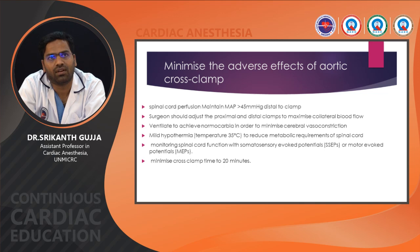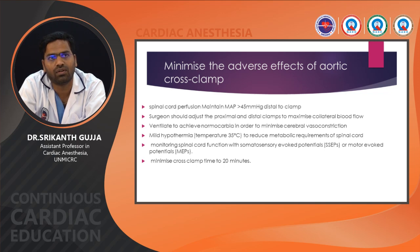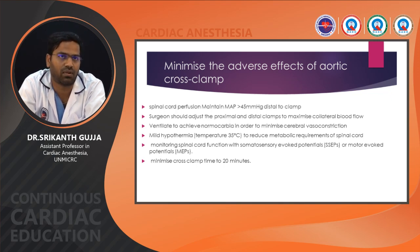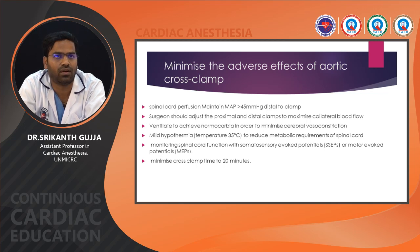To minimize the adverse effects of aortic cross clamping on spinal cord perfusion: maintain mean arterial pressure greater than 45 mmHg distal to the clamp. If hypotension occurs, the surgeon should adjust the proximal and distal clamps to maximize collateral blood flow. Ventilate to achieve normocarbia to minimize cerebral vasoconstriction, or provide mild hypercarbia for good cerebral perfusion. Use mild hypothermia to reduce metabolic requirements of the spinal cord. Monitor spinal cord function with SSEP and MEPs. Minimize cross clamp time to 20 minutes.